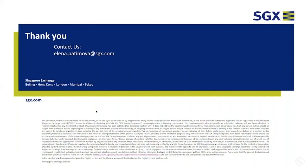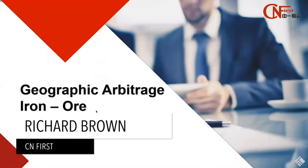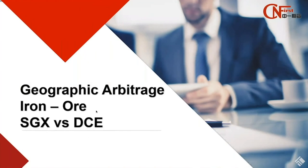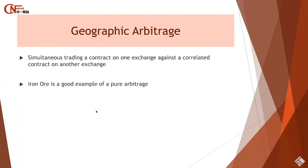I would like to pass the microphone to Richard Brown from CN First, who is going to talk about the specifics of trading iron ore arbitrage. I'm Richard Brown with CN First International Futures Limited. I'm going to be looking at generating alpha through geographical arbitrage in commodities by looking at the iron ore contract which trades on SGX as well as in China on the DCE — the Dalian Commodity Exchange. Geographic arbitrage is simultaneously trading a contract on one exchange against a correlated contract on another exchange in a different geographic location. The iron ore represents a pure arbitrage with low risk appetite and is a good example for us today.